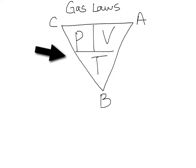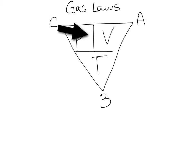When you're reading your word problem, you have to figure out what you're holding constant. So if the initial volume is 15 liters at a temperature of 100 degrees Celsius and the final volume is 20 liters, what's the final temperature? Well, pressure is being held constant, so you put your finger over the pressure corner. You get V1 over T1 equals V2 over T2 — and that is Charles' Law, represented by the C.